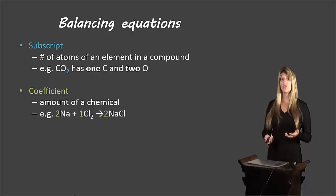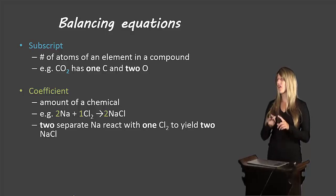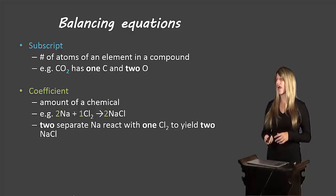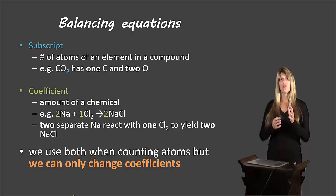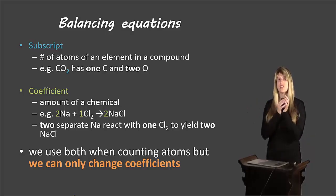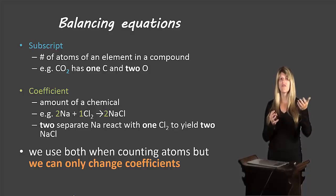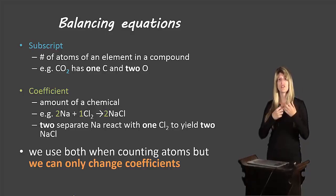So if we have 2 Na plus 1 Cl2 gives us 2 NaCl, that means two separate sodium atoms react with one diatomic chlorine to yield two sodium chloride compounds. Here's the important point: we use both coefficients and subscripts when counting how many atoms we have, however we can only change the coefficient. When there's a subscript in a compound, that compound is stuck as it is — if it's CO2, we can't just change it to CO and get rid of one of the oxygens. It always stays as CO2; we can only change the coefficient to change how much of it we have. Just like when I had the red pairs or the green triplets, I could only add them as pairs or as triplets — they had to stick together as one compound.